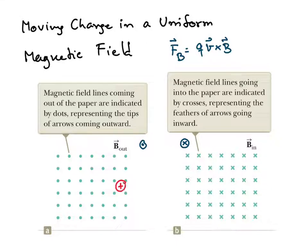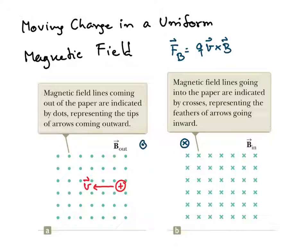If we have a positive charge moving with a velocity vector like this, from the right-hand rule you point your four fingers in the direction of the velocity vector and the magnetic field vector points out of your palm — meaning it points out of the screen. Your thumb will then point upward, which is the direction of V cross B.